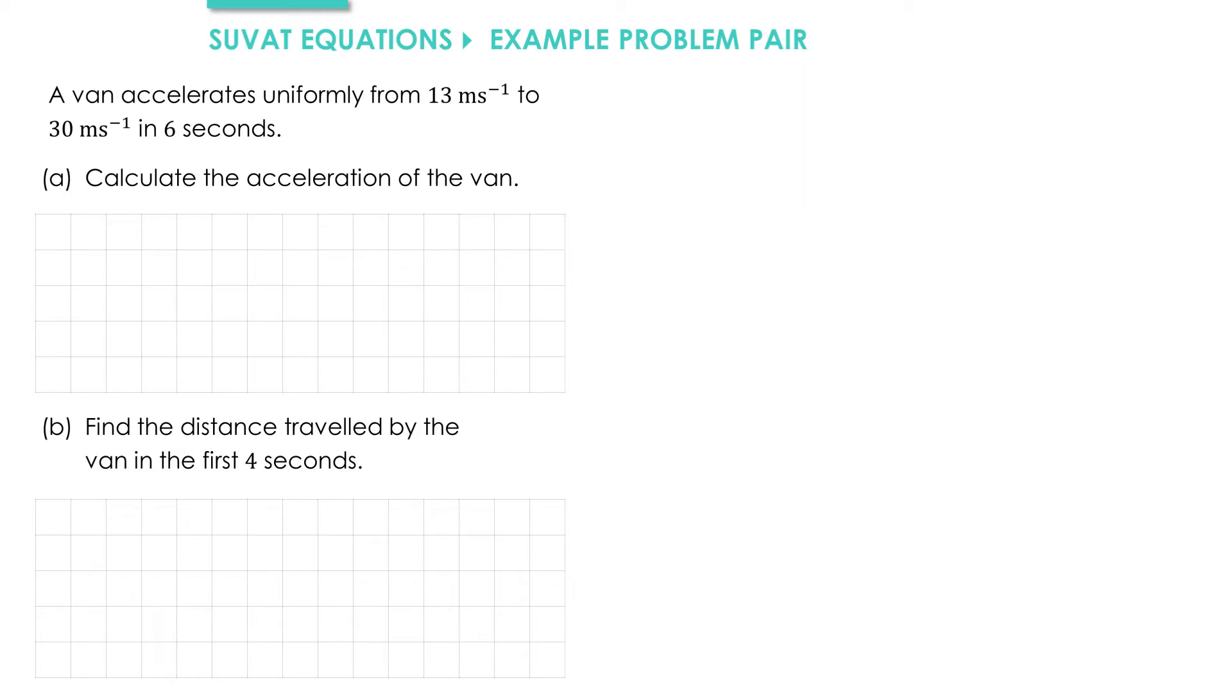At the start of each question involving the SUVAT equations, it's helpful to write down the values we know for S, U, V, A, and T. In the question, we're told a van accelerates from 13 meters per second, so the initial velocity U is 13 meters per second. The final velocity V is 30 meters per second, and this change in velocity takes 6 seconds. We're calculating the acceleration, so we'll put a question mark for A, and as we don't want the displacement, we'll just put a cross next to S.